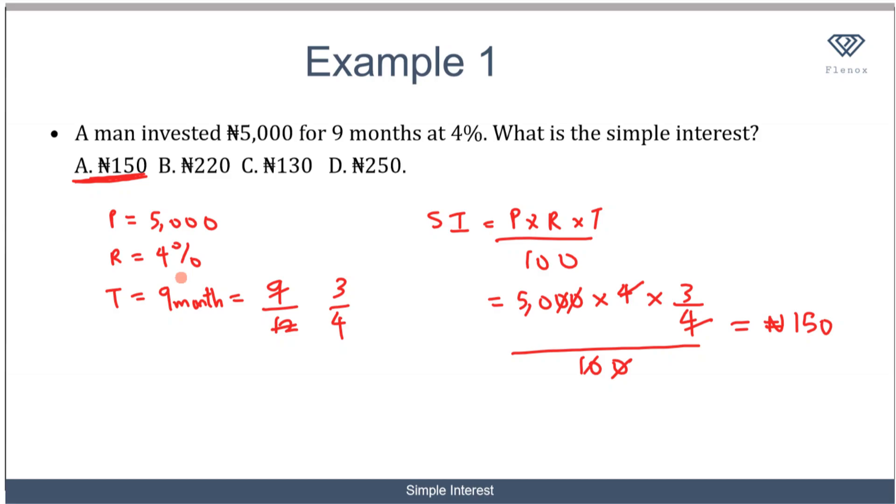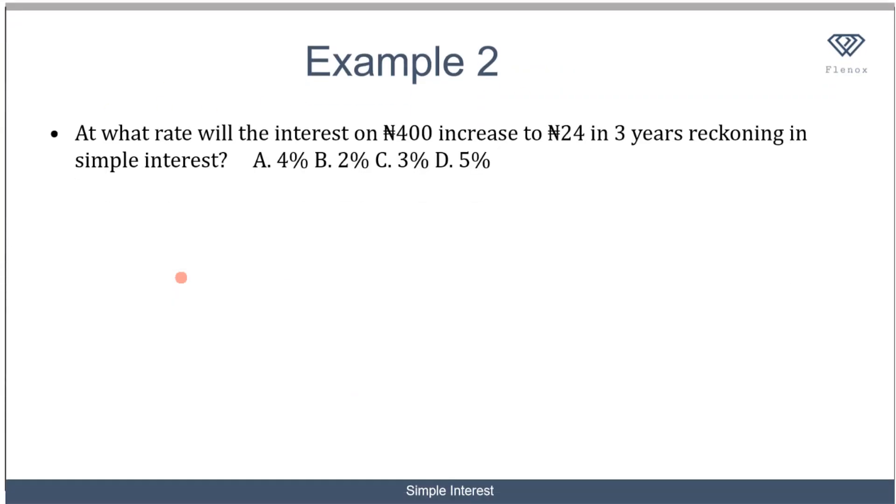Now let's check out another example. This example is pretty straightforward. It says at what rate will the interest on N400 increase to N24 in 3 years reckoning in simple interest? We are told that they are investing an amount of 400 naira and you intend to get an interest of 24 naira in 3 years.